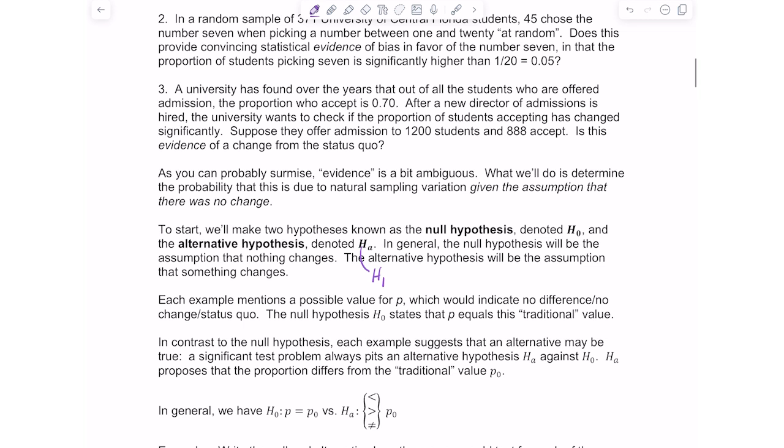In contrast to the null, each example suggests that an alternative may be true. A significance test problem always pits an alternative hypothesis against the null hypothesis. The alternative hypothesis proposes that the proportion differs from the traditional value, which is P0. That's your claim.